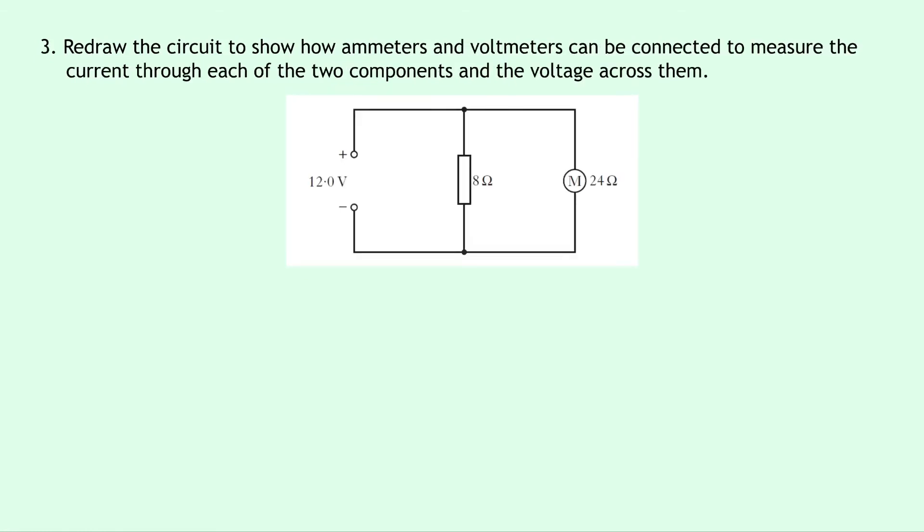Lastly, question three says to redraw the circuit to show how ammeters and voltmeters can be connected to measure the current through each of the two components and the voltage across them. So by the two components they mean the resistor and the motor. The battery is 12 volts and we've got an 8 ohm resistor and a 24 ohm motor. So here we need to measure the current through each of these components and the voltage across them.